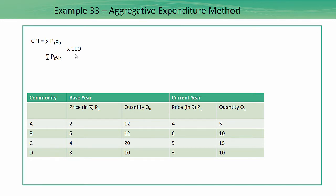Let's do a problem on that. This is the question which is being given to us. We have been given the commodity, the price in the base year, the quantity in the base year, the current year price and the quantity in the current year.